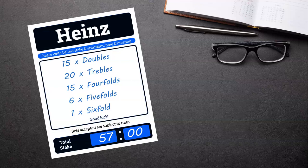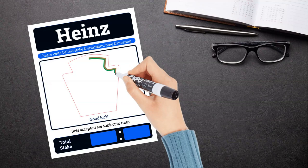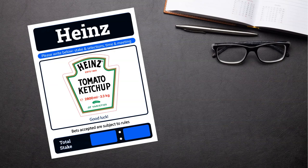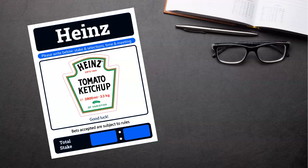The bet gets its name from the 57 varieties slogan used by Heinz, the food company famous for their ketchup and baked beans. Heinz actually have way more than 57 products, but Henry Heinz considered 57 to be a lucky number. Maybe it will also be lucky for you if you place a Heinz bet.